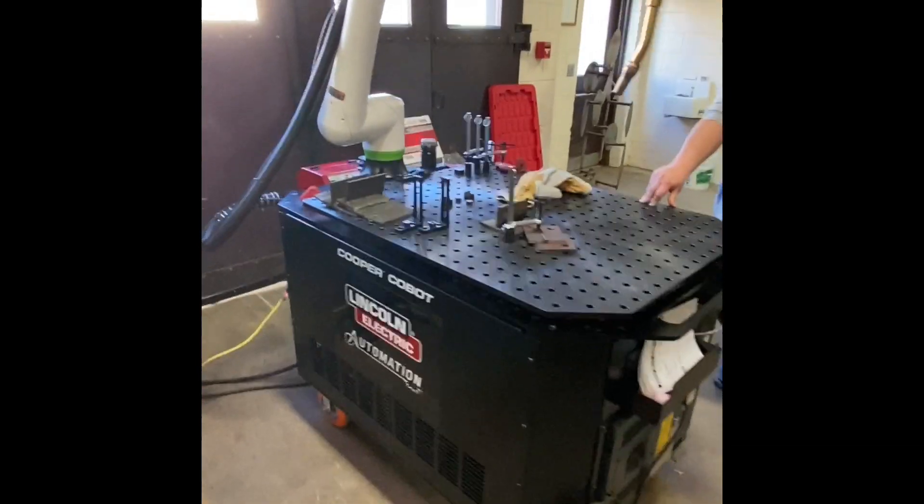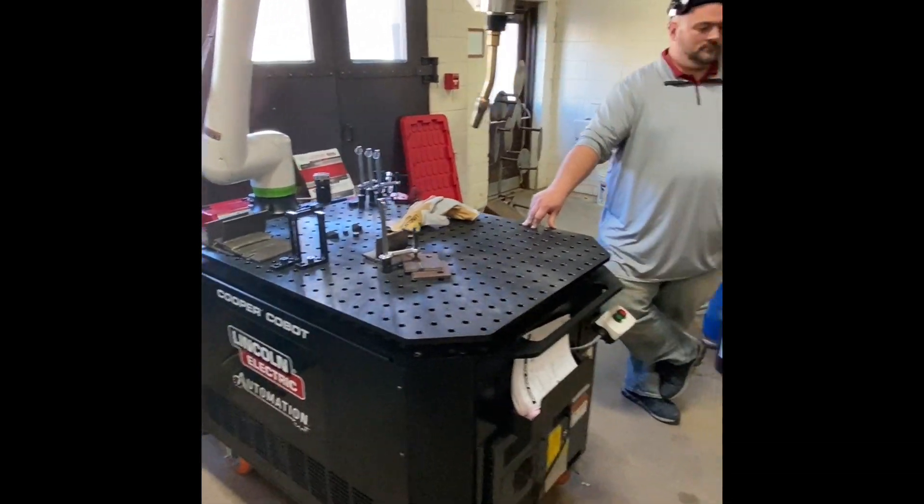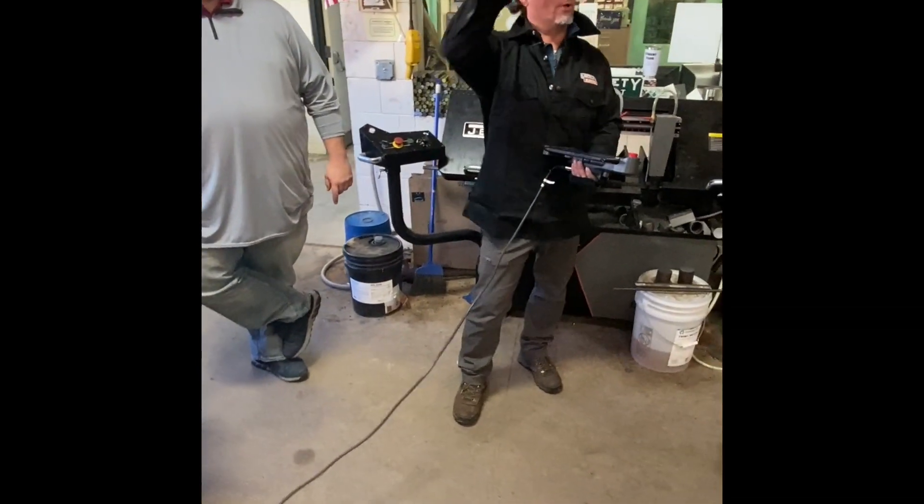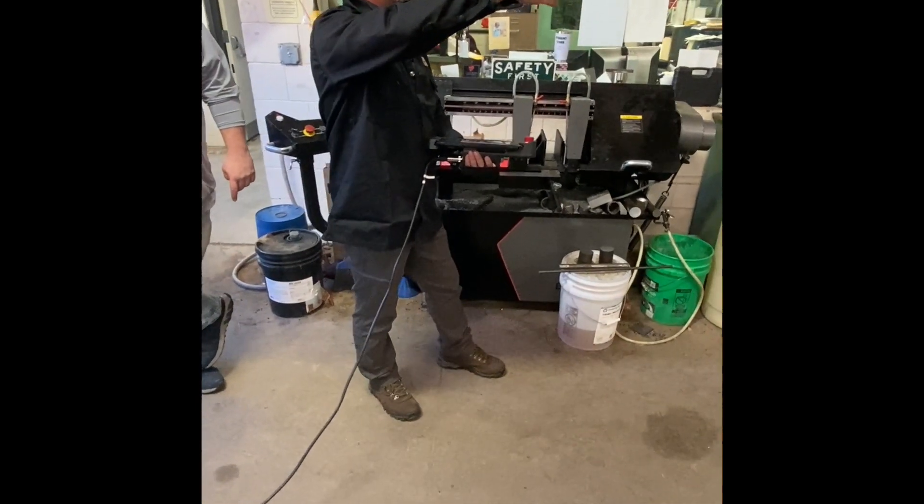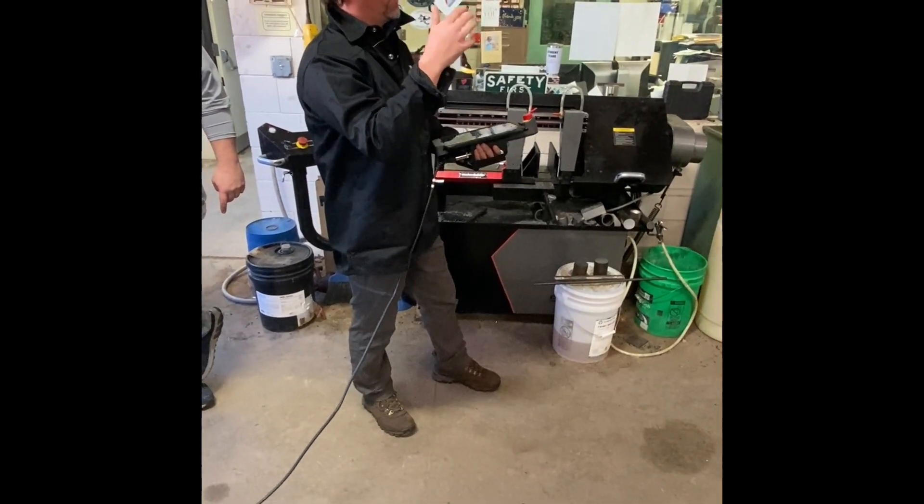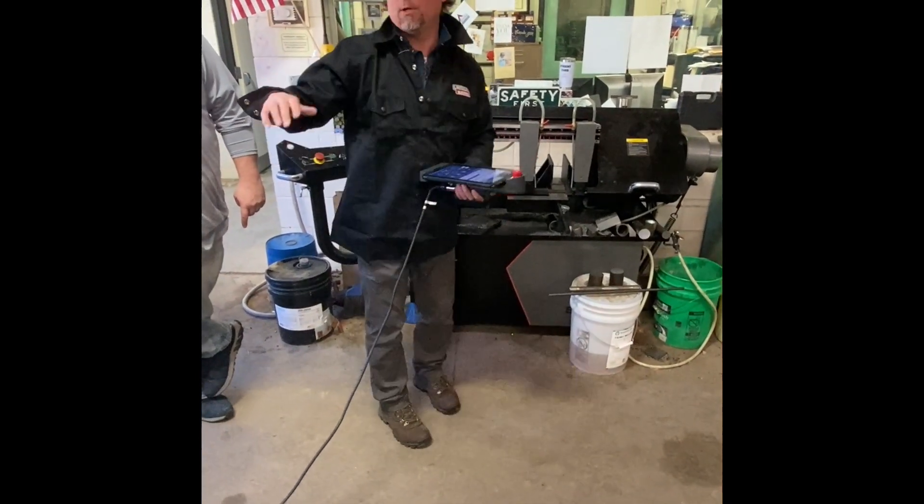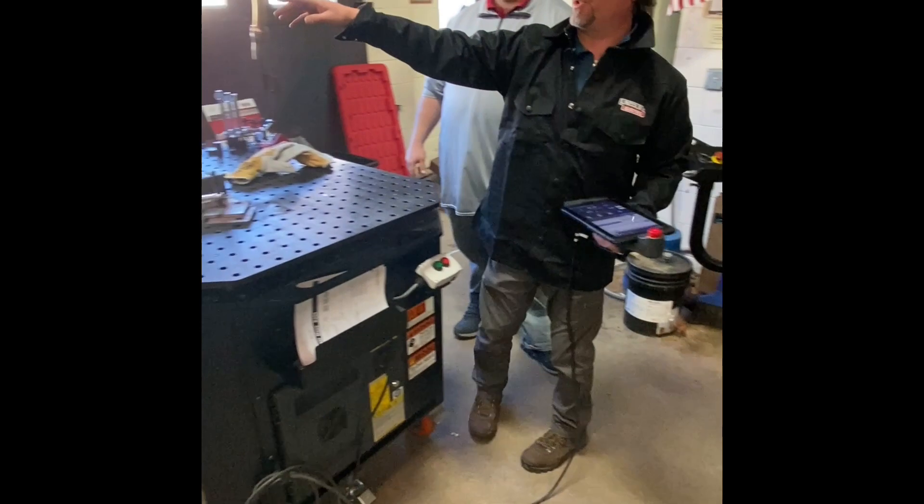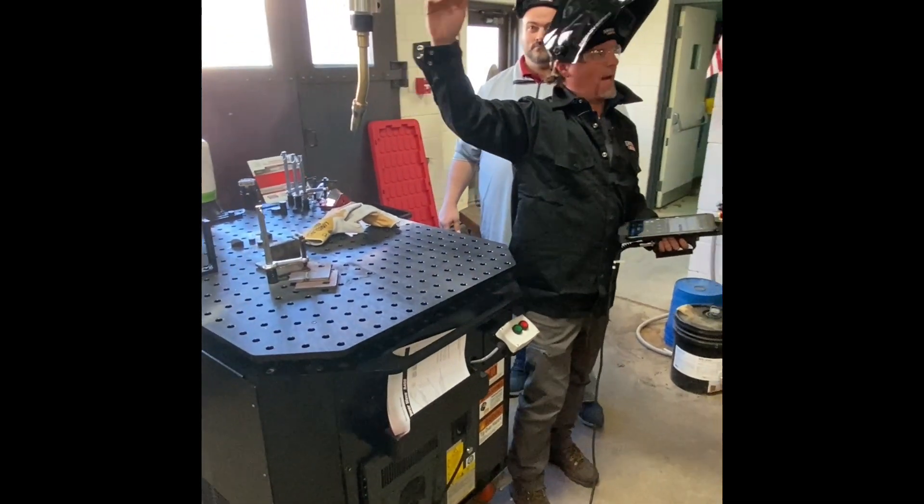So what's different about this versus your traditional is the way you move this. If you notice on your other robot in there, you have guarding, you have things around it that keep you away from the arm moving around. So this arm actually will just, it's got some sensing on it that it'll just stop.